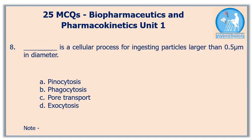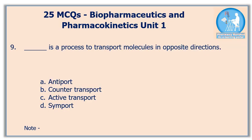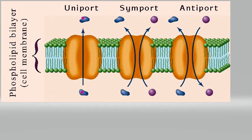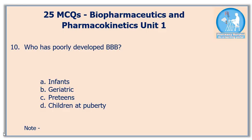Question number eight: dash is a cellular process for ingesting particles larger than 0.5 micron in diameter — the correct answer is option B, phagocytosis. Question number nine: dash is a process to transport molecules in opposite directions — the correct answer is option A, antiport. In this image you can see the directions of molecules transported; there are basically three types: uniport, symport, and antiport.